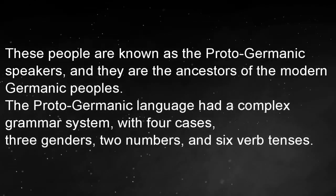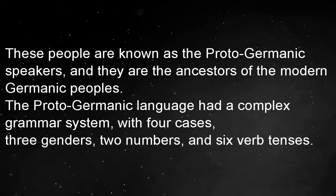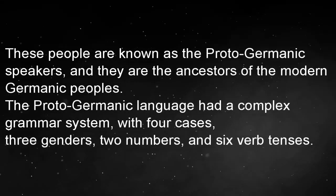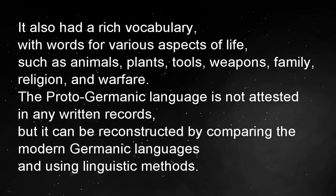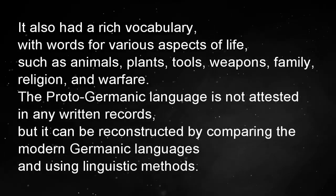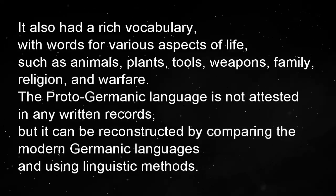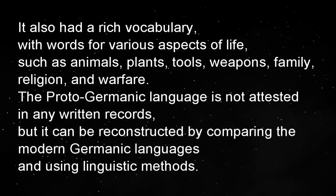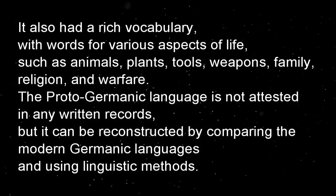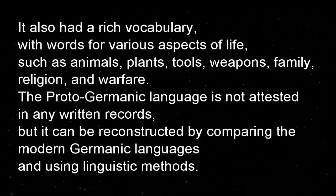The Proto-Germanic language had a complex grammar system, with four cases, three genders, two numbers, and six verb tenses. It also had a rich vocabulary, with words for various aspects of life such as animals, plants, tools, weapons, family, religion, and warfare. The Proto-Germanic language is not attested in any written records, but it can be reconstructed by comparing the modern Germanic languages and using linguistic methods.